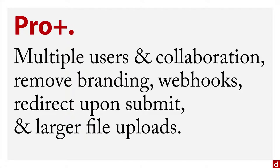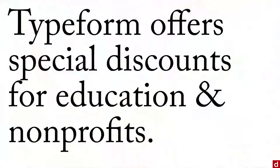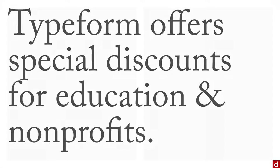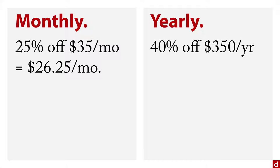I like to think of these as very special baskets. Typeform offers special discounts for education — students and teachers — and for nonprofit or nongovernmental organizations. There are two discount tiers. On the monthly plan, pro is normally $35 per month, but if you're in academia or a nonprofit, you get 25% off, which works out to $26.25 per month. On the yearly plan, pro is $350 and pro plus is $700, but you get 40% off — so that works out to $210 a year.